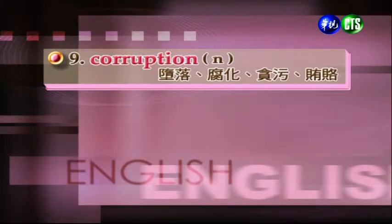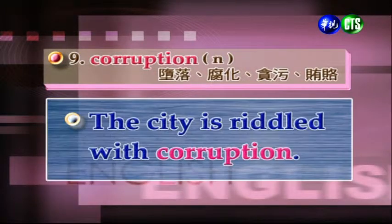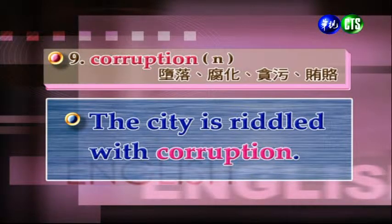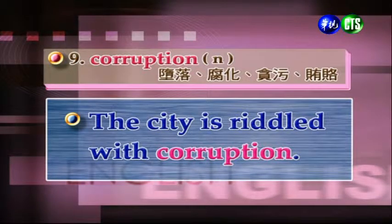我們往下看：Corruption。Corruption，名詞，墮落、腐化、貪污、賄賂。例句：The city is riddled with corruption. 這個城市充滿了貪污、腐敗這樣的弊病漏洞。Riddle有漏洞的意思，充滿了這樣子的一個狀況。